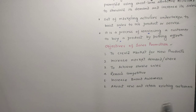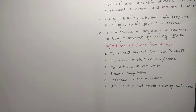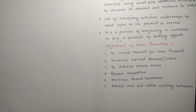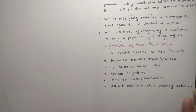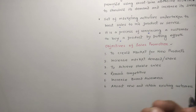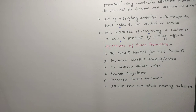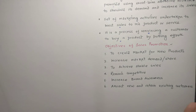The second objective is to increase market demand and share. As the famous saying goes, 'jo dikta hai, woh bikta hai' — what is visible, sells. Sales promotion is a right example of this. When a product is already in the market but consumer tastes and preferences change, sales promotion helps by changing promotional strategies and increasing product creativity to keep customers engaged.